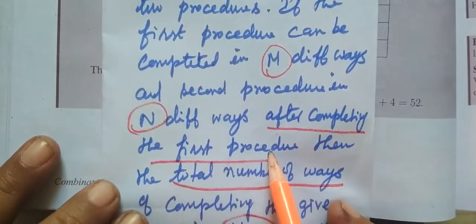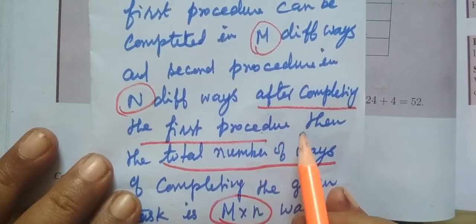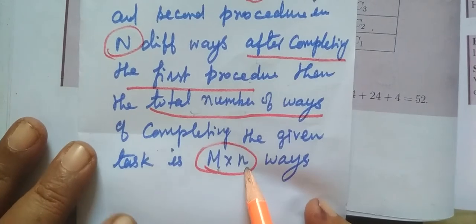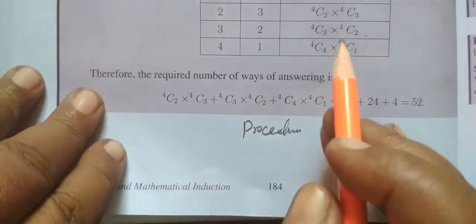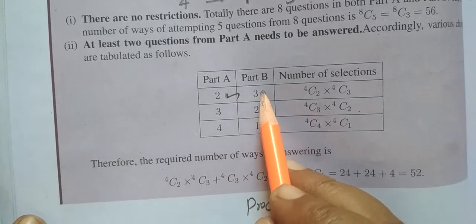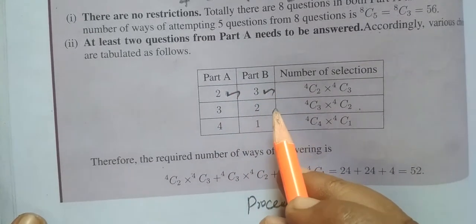After completing the first procedure, we will go to the second procedure. The total number of ways is M into N ways. Let's do the second procedure.